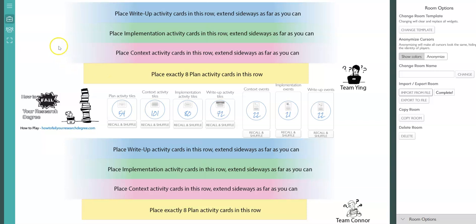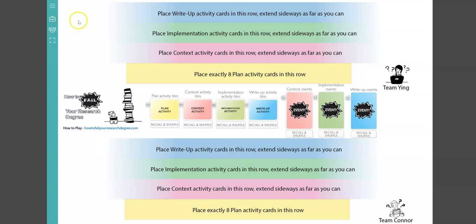So then you will go out of edit mode by clicking the suitcase icon again and you can see all the cards are here. You click to flip the cards and you drag to place them.